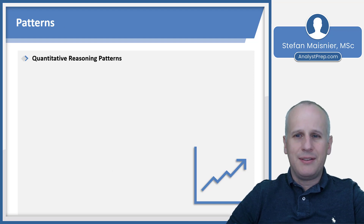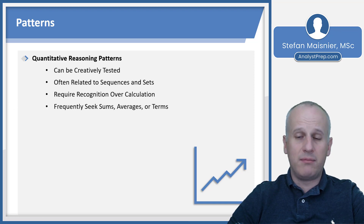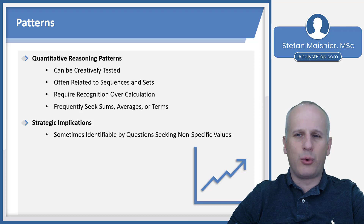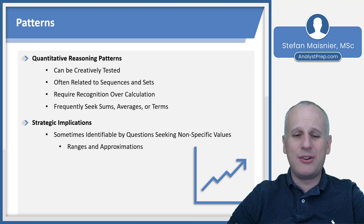The most likely way you'll encounter sequences is in pattern recognition. Quantitative reasoning patterns can be creatively tested, often related to sequences and sets, requiring more logical recognition rather than rote calculation. They can seek sums, averages, or individual terms. If you're being asked for a non-specific value — what must be, what's the greatest value, what's the least value, what's possible, or ranges and approximations — that can be an indication you're looking at a pattern or sequence type of problem.